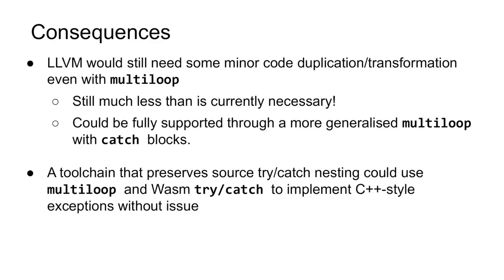So what are the consequences of this? In the worst case, we showed earlier that we can still compile such examples by falling back to duplicating the catch-block code. Forgetting about multi-loop, the LLVM WebAssembly backend already has to do this in some cases, so we're not making the problem any worse — we're merely not fully solving it with multi-loop. We could improve this situation by defining a further generalisation of multi-loop which declares its own catch-blocks and allows the bodies of such catch-blocks to jump back inside a multi-loop body. Perhaps this could be pursued as a post-MVP to multi-loop. This trouble with exception handling comes about because LLVM does not preserve C++'s try structure, so it cannot take advantage of C++'s language restrictions on control flow into try when generating WebAssembly.